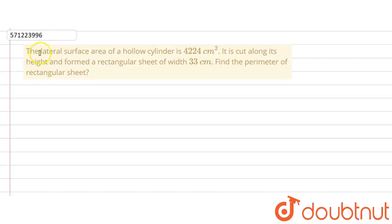The given question says that the lateral surface area of a hollow cylinder is 4224 cm². It is cut along its height and formed a rectangular sheet of width 33 cm. Find the perimeter of the rectangular sheet.